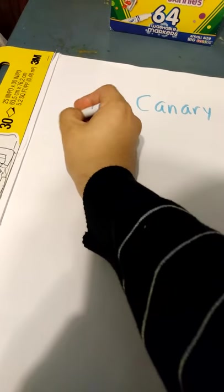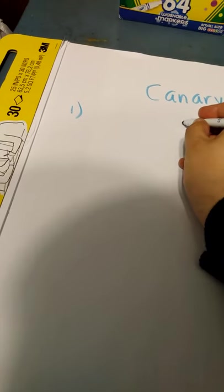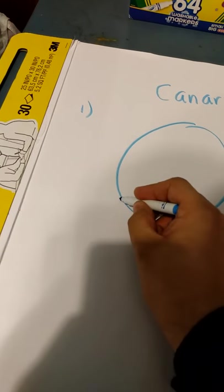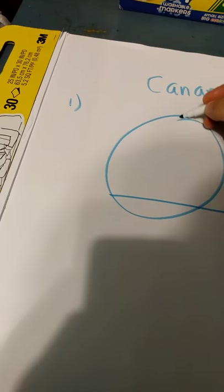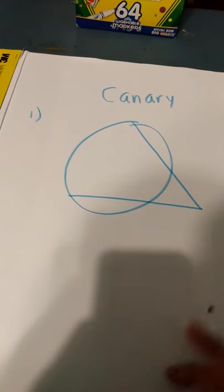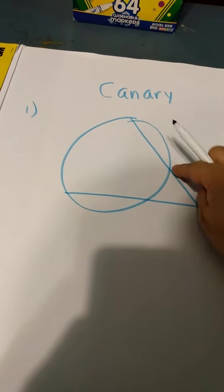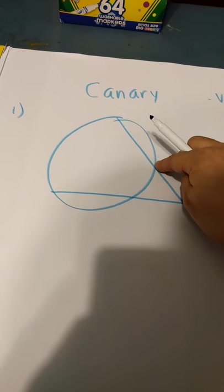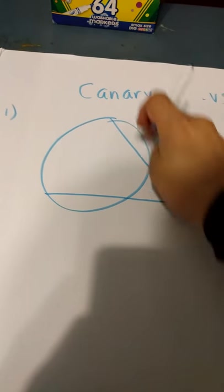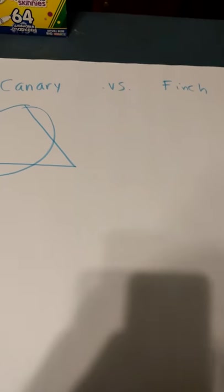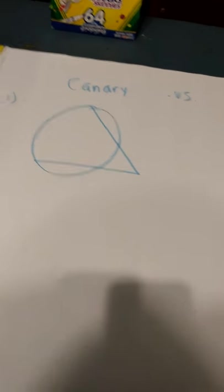For number one, we're going to draw our circle and then the beak sticking out of the skull of the bird. Notice there's a little gap underneath and also above. As I was saying in class today, there's a forehead. That's why it's a canary, to show you the difference with the finch.